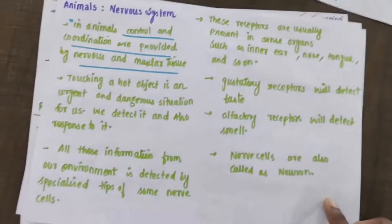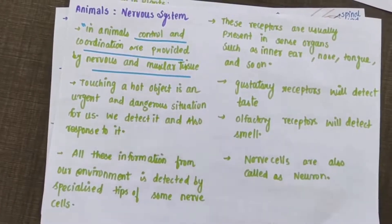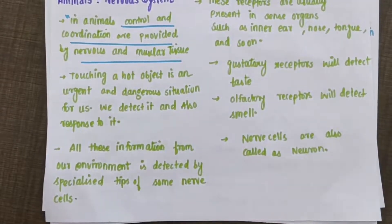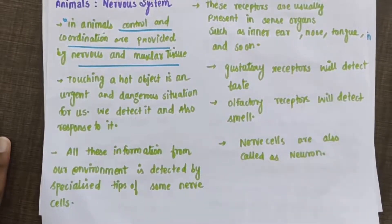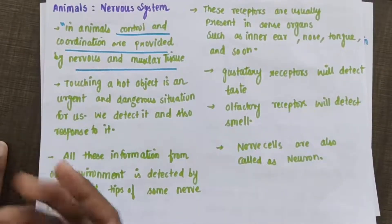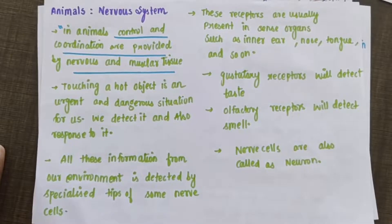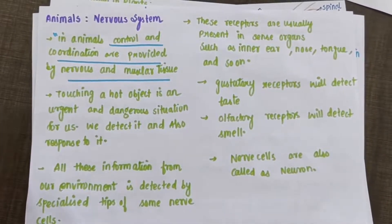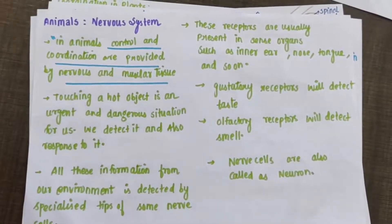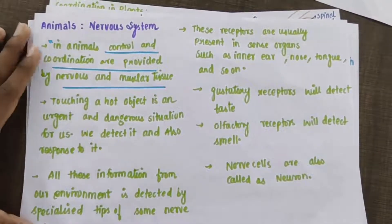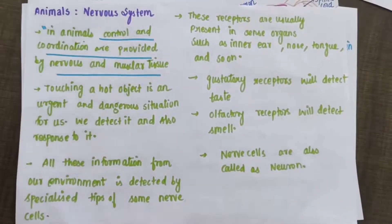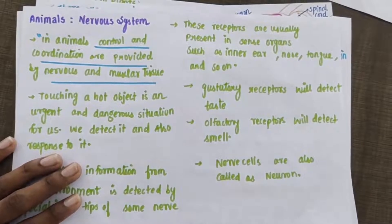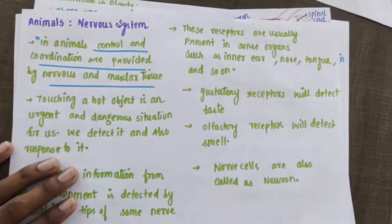Control and coordination in animals is carried out mainly by nervous tissue and muscular tissue. Nervous tissue is made up of nerve cells, also called neurons. The nervous system is made up of neurons. The nerve cell receives a message and conducts it. Neurons are the specialized functional units of the nervous system.